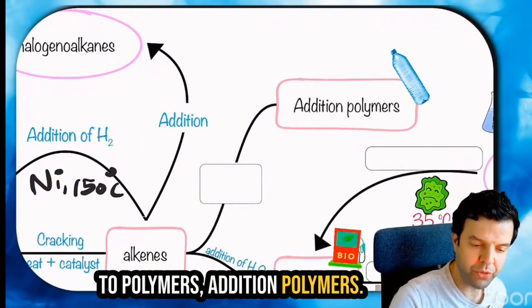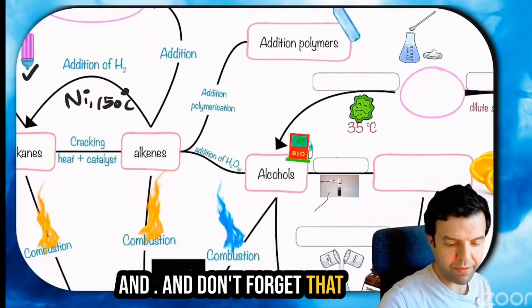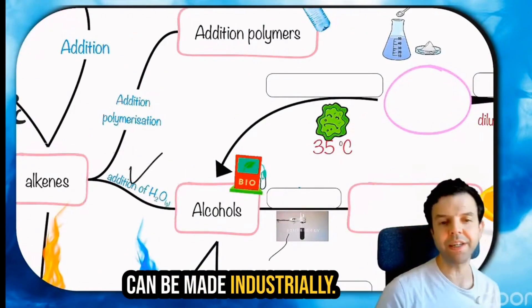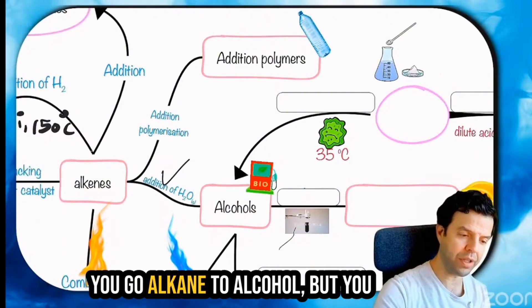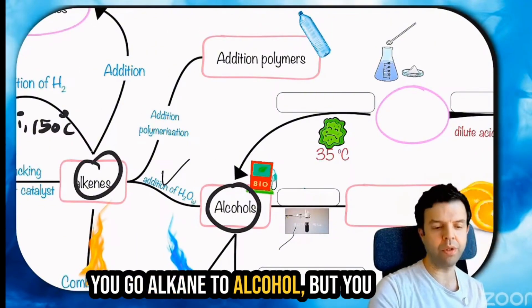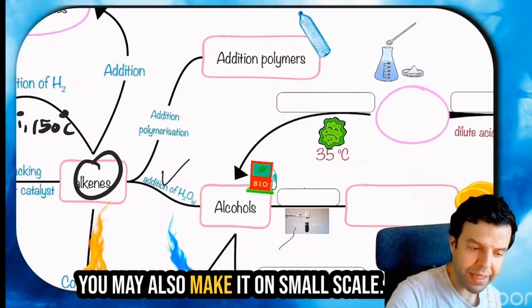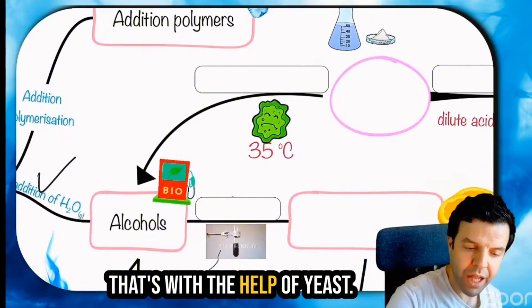You need just any catalyst. Alcohols can be made that way. It can be made industrially. I mean on large scale. You would use this method. You go alkene to alcohol. But you may also make it biologically. You may also make it on small scale.